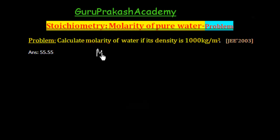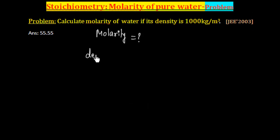So we have to calculate molarity. The density of water is given. This is the density of water: 1000 kg per meter cube.